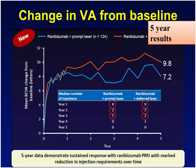We can anticipate how many injections a patient needs in the first five years. Five-year results showed that in the first year most patients required between eight and nine injections, in the second year two to three injections, in the third year one to two injections, with the last two years free of injections.